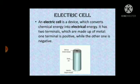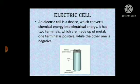Now let's learn what is an electric cell. An electric cell is a device which converts chemical energy into electrical energy. It has two terminals which are made up of metal. One terminal is positive while the other one is negative. The metal cap is known as the positive terminal, where the metal disc is known as the negative terminal.